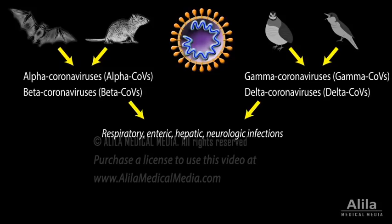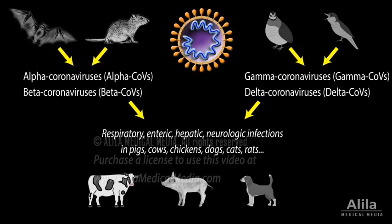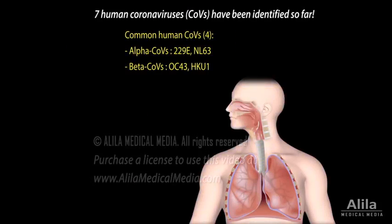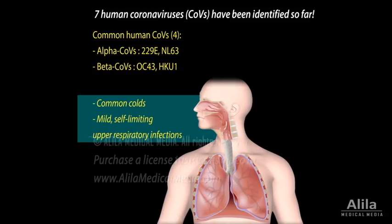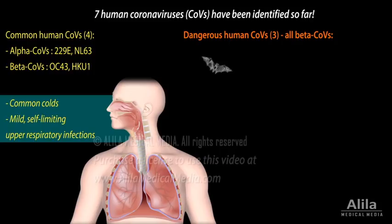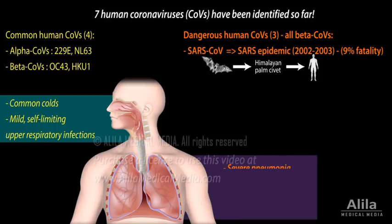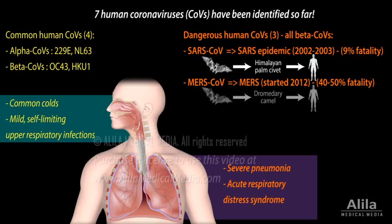Coronaviruses are responsible for a wide range of diseases in many animals, including livestock and pets. In humans, they were thought to cause mild, self-limiting respiratory infections until 2002, when a beta coronavirus crossed species barriers from bats to a mammalian host before jumping to humans, causing the severe acute respiratory syndrome SARS epidemic. More recently, another beta coronavirus is responsible for the serious Middle East respiratory syndrome, MERS, which started in 2012. The novel coronavirus responsible for the coronavirus disease 2019 pandemic, COVID-19, is also a beta coronavirus.